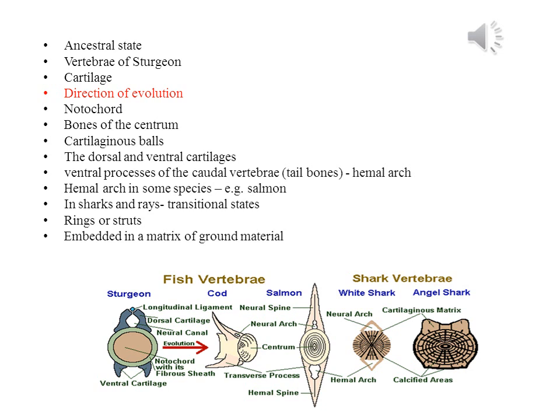The sturgeon is an ancient fish and represents the ancestral state. The vertebrae of sturgeon are not ossified and all the parts are in fact cartilage. The arrow represents the direction of evolution. The notochord is broken into sections, some of which become the bones of the centrum and the rest becomes the cartilaginous balls that keep the bones from damaging each other. The dorsal and ventral cartilages become ossified and are then called the dorsal and ventral processes. In most fish, the ventral processes of the caudal vertebrae move closer together to form a hemal arc, and in some species this hemal arc forms below the other vertebrae as well.